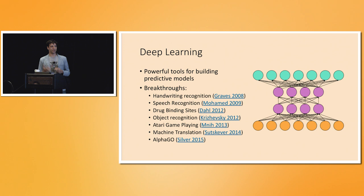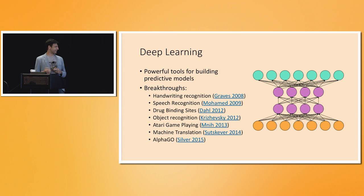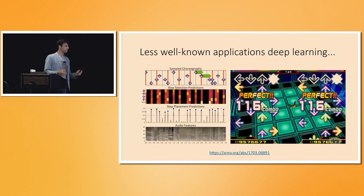Around the time I started, there was a consensus that something was happening with deep neural networks for well-supported large-dataset computer vision tasks. But basically outside of computer vision, it didn't really work. Then there became more of a consensus that for various problems in natural language processing, healthcare, machine translation, and speech recognition, deep learning was the go-to toolkit for solving predictive modeling problems.